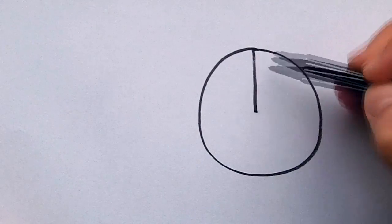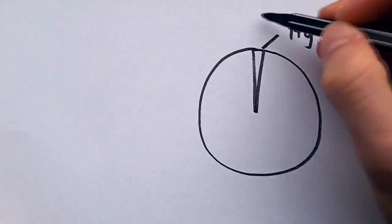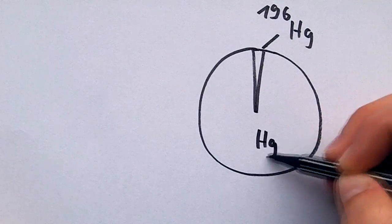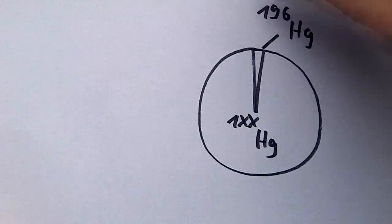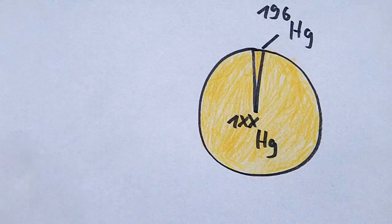Since mercury-196 with 0.15% is the least common mercury isotope, it seems natural to search for a procedure to convert the other mercury isotopes to gold too.